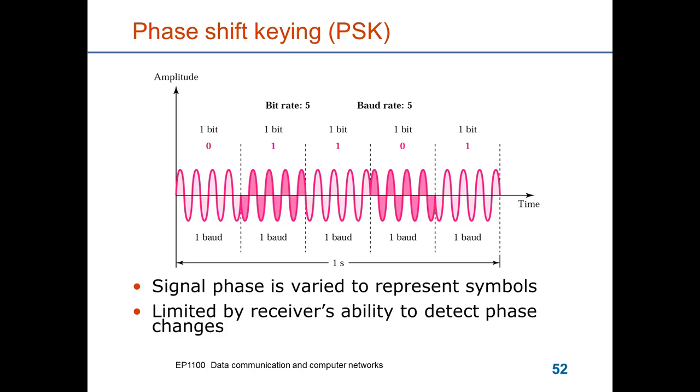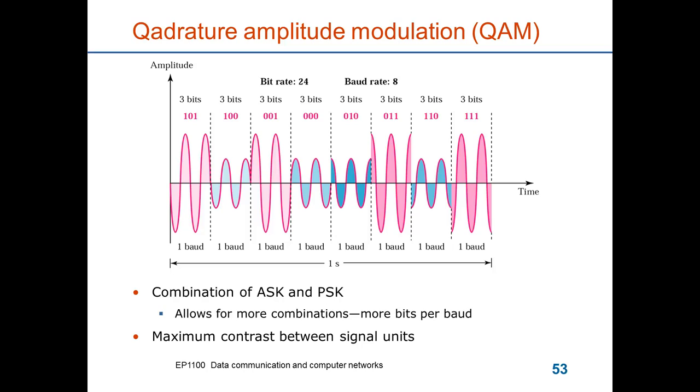You can combine these different formats, and here is an example called quadrature amplitude modulation, which uses two amplitude values and four phase values. So that gives you two bits for the phase values and one bit for the amplitude values. So in total each signal element can encode three bits.